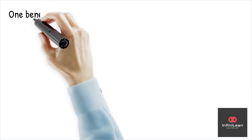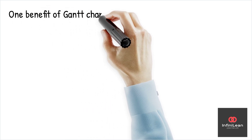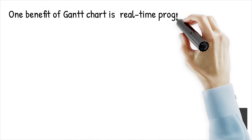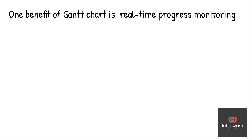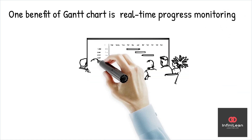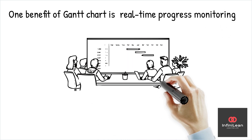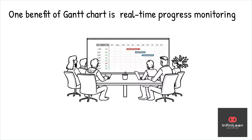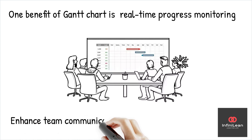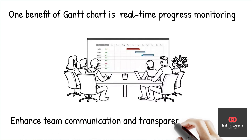One key advantage of using Gantt charts in Lean Six Sigma projects is real-time progress monitoring. As tasks are completed, managers can update the chart, maintaining an up-to-date visual reference. This feature is essential for maintaining project momentum and identifying issues early.